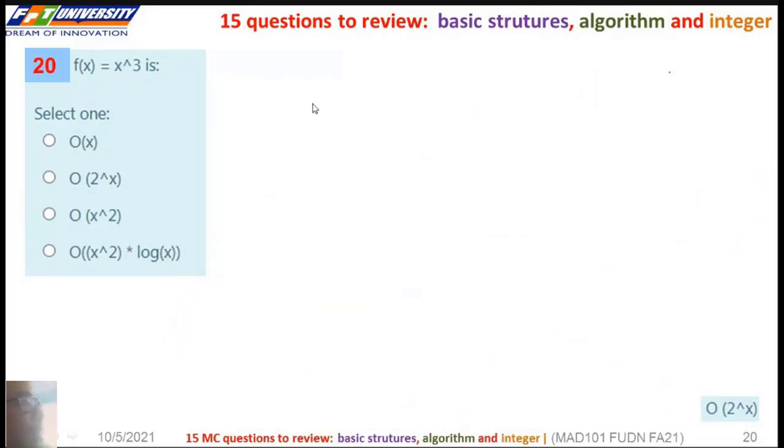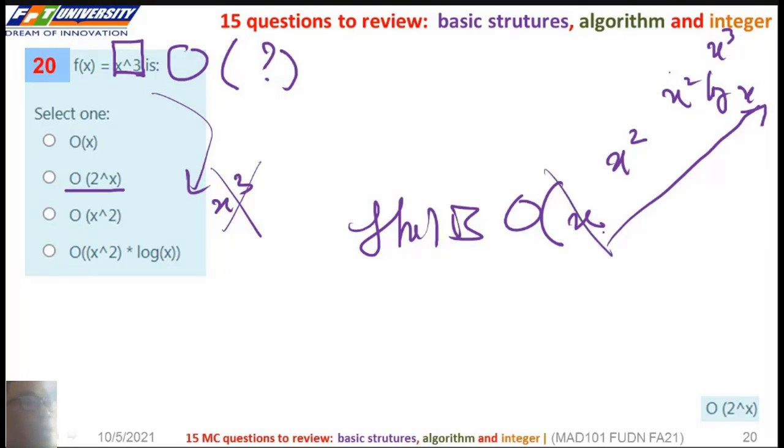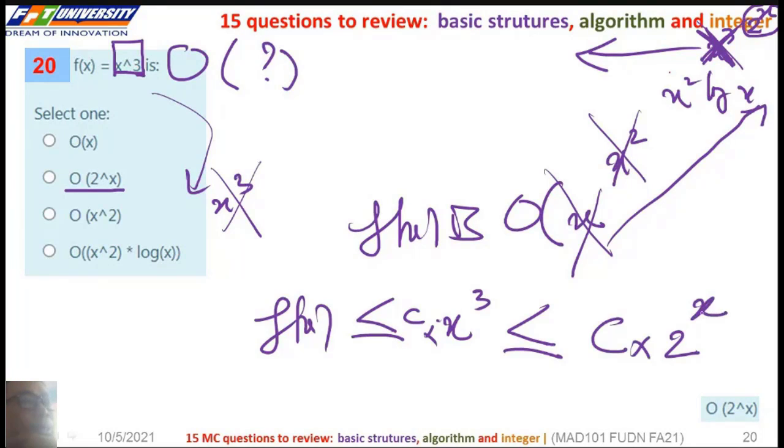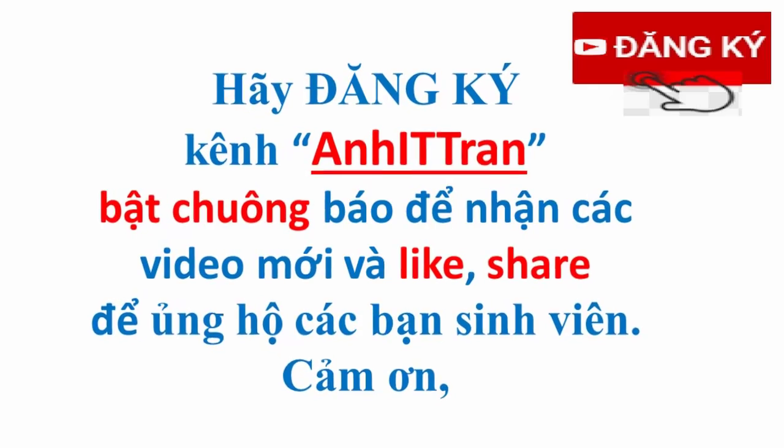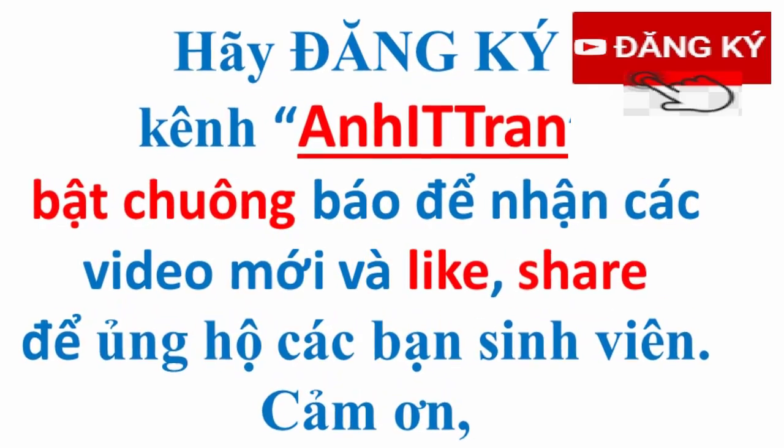So here the last question. We can say it's big-O of n^3. We can say also it's big-O of 2^x, but here does not have n^3. So we can't choose power output. The second one is correct. Thank you.